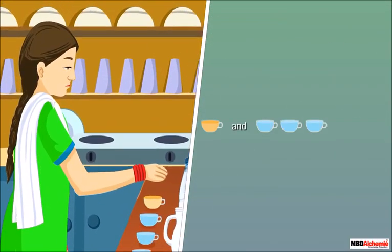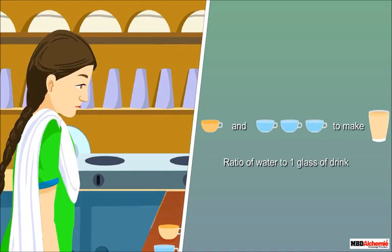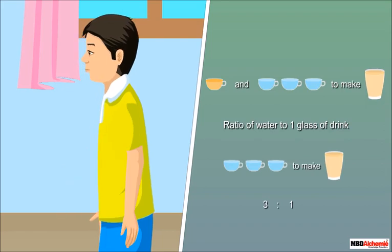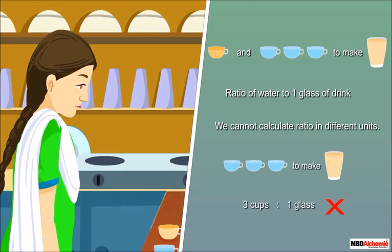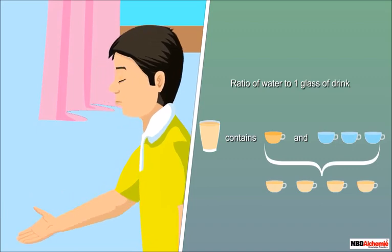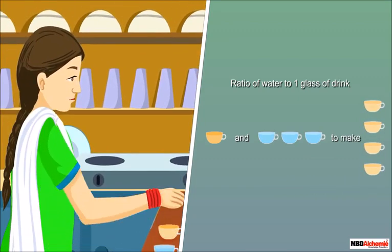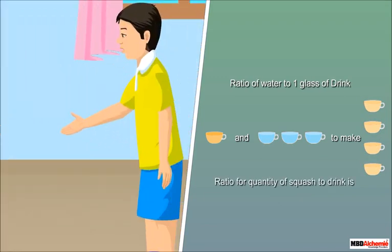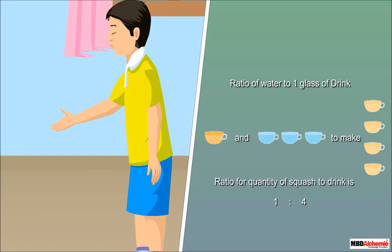We have used squash and water in the ratio of one is to three. Can you write the ratio of water to one glass of drink? I think it is three is to one. No — we cannot calculate ratio in different units. One glass of drink contains one cup of squash and three cups of water, which is four cups total. So the ratio of water to drink is three is to four, and the ratio of squash to drink is one is to four. While writing ratios, we must first convert different quantities to the same unit.